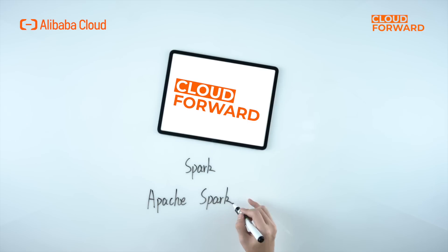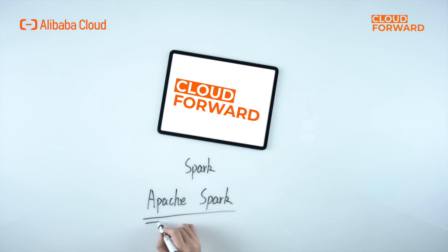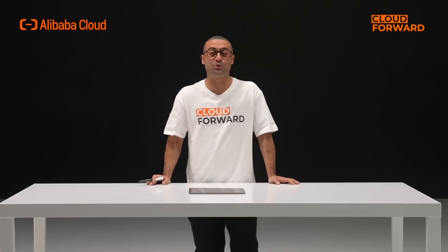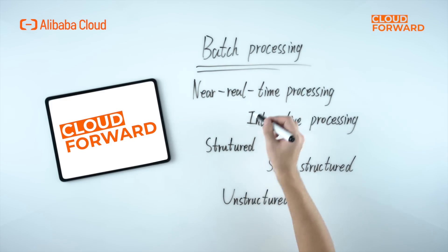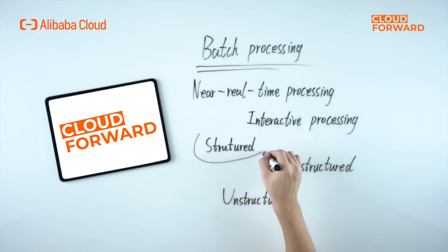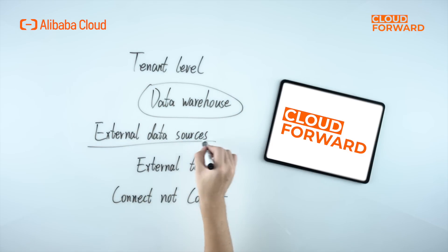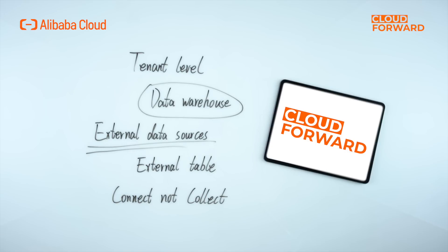MaxCompute's highly integrated Spark engine includes a built-in Apache Spark engine that provides full Spark functionality, tightly integrated with MaxCompute's computing resources, data, and permission system. In terms of data processing capability, MaxCompute supports batch processing, near-real-time processing, and interactive processing of structured, semi-structured, or unstructured data. MaxCompute offers unified metadata at the tenant level, allowing enterprises to easily access a complete enterprise data catalog, establishing connections between data warehouse and external data sources via external table under the basis of connect, not collect.